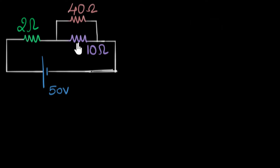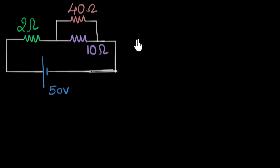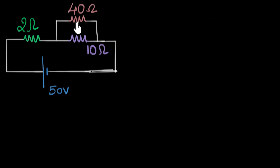We have three resistors connected as shown across a 50 volt supply. The question is to find the voltage across each resistor and to find the current through each resistor.